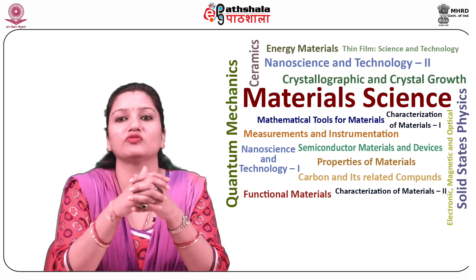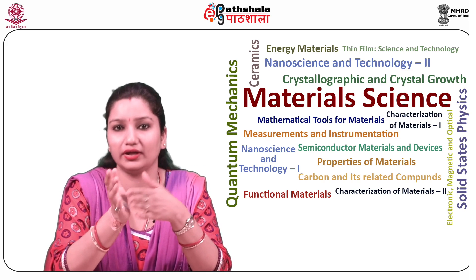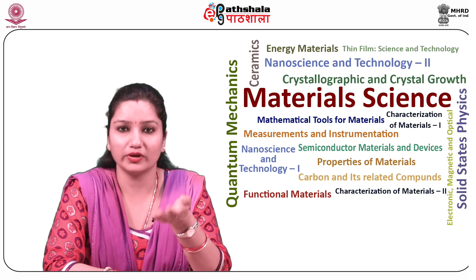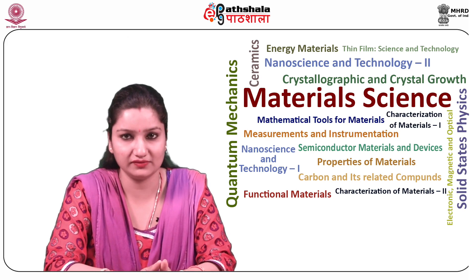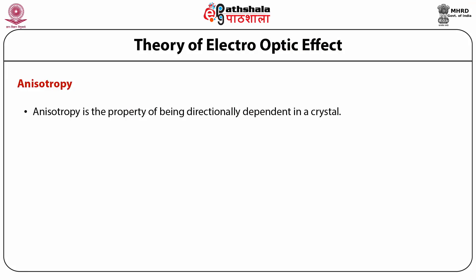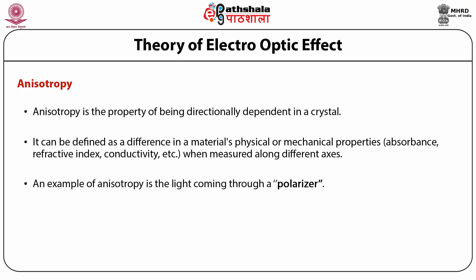Much attention has been paid to electro-optic modulators with reflection geometry in the past few decades. Electro-optic modulator is based on the electro-optic effect which corresponds to the change in the refractive index of an anisotropic material with applied electric field. Anisotropy, being directionally dependent in a crystal, can be defined as a difference in a material's physical or mechanical properties — i.e. absorbance, refractive index, conductivity, etc. — when measured along different axes. An example of anisotropy is the light coming through a polarizer.